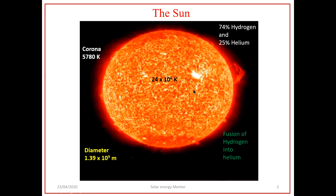Energy is radiated from the Sun as a result of several fusion reactions taking place at the core of the Sun. The most important fusion reaction is the combination of hydrogen to form helium.